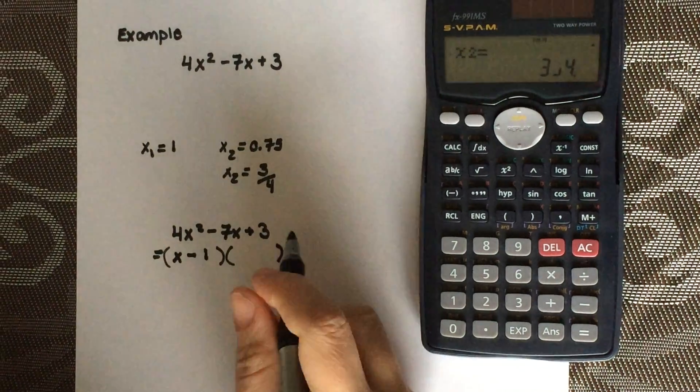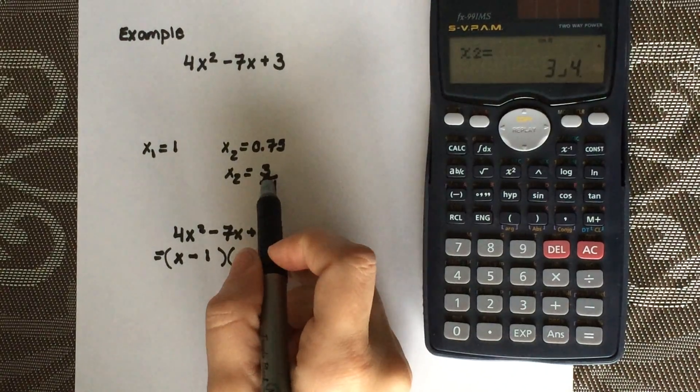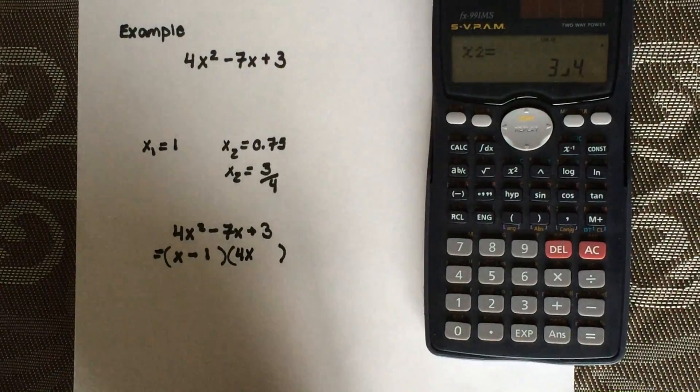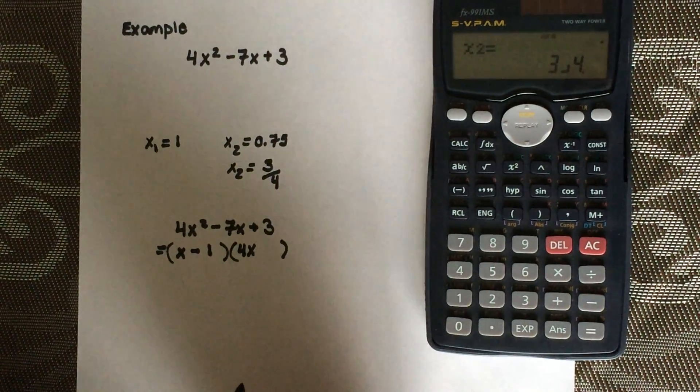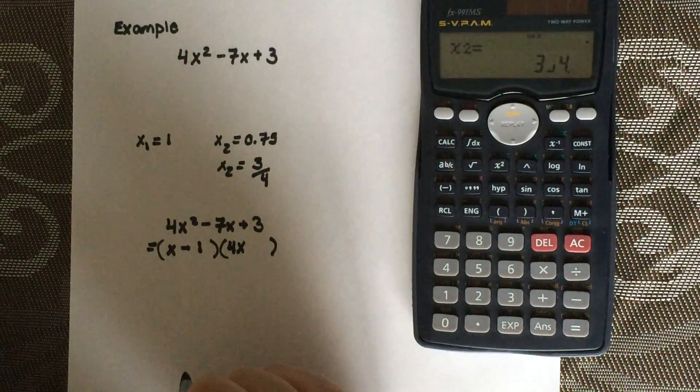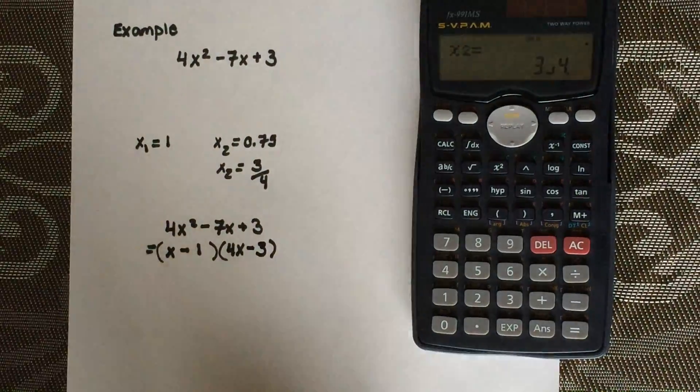Second one is a fraction, so what happens is the 4 is the value in front of your X, so it's 4X, the bottom number in the denominator. And then 3 is the value beside it. Since it's positive, it's also going to be negative. And there you have it.